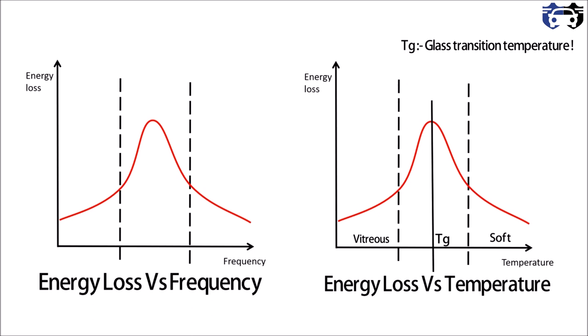In summary, tires are generally operated in the moderate range of frequency and temperature. At lower frequency and higher temperature the tire material behaves as a spring. At higher frequency and lower temperature the tire material behaves as a rigid material. At the moderate range of both frequency and temperature the tire material behaves as a viscoelastic material.